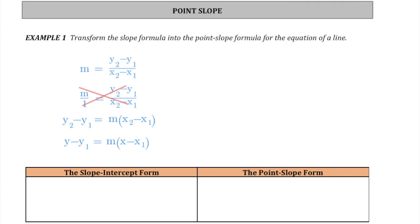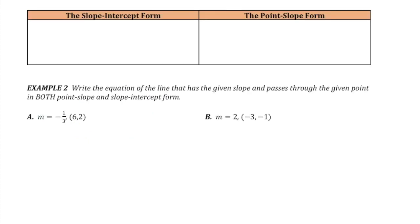You may also have seen it written this way. The only difference is instead of calling your point x1, y1, we call it a and b. So we now have two different tools for writing the equation of a line.